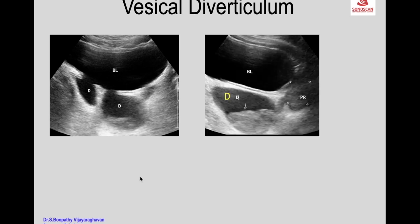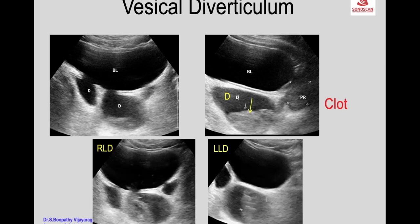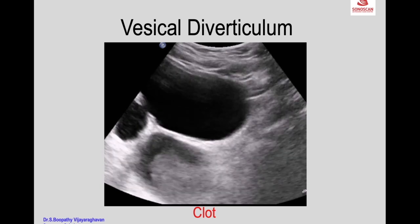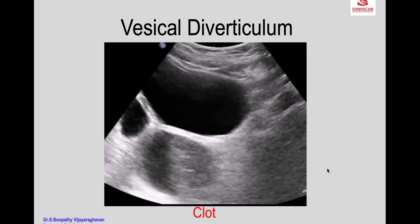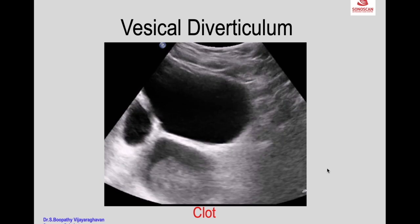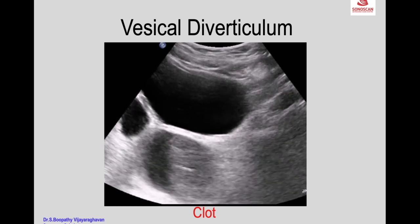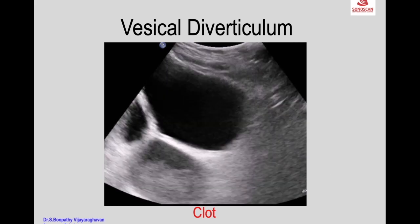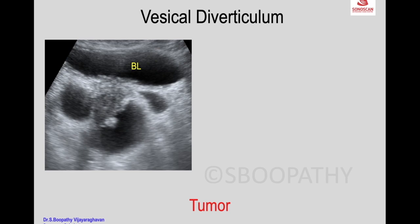Soft tissue mass within the diverticulum due to a clot can be seen in patients presenting with hematuria. The clot can be confirmed by shifting the position of the patient — the clot shifts within the diverticulum. Color Doppler shows no flow, confirming it is a clot. The shifting clot with patient repositioning is nicely demonstrated.